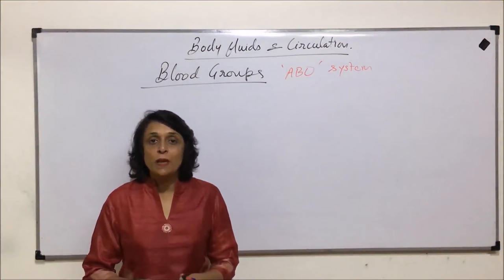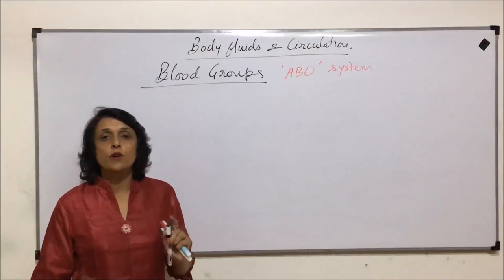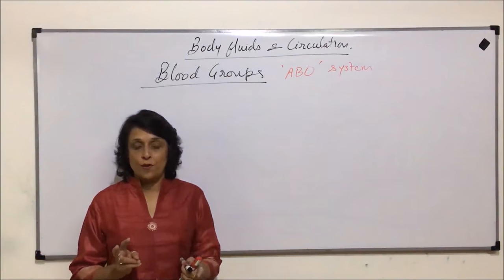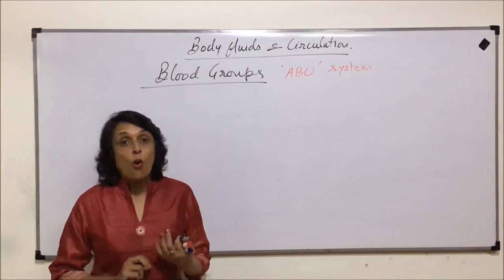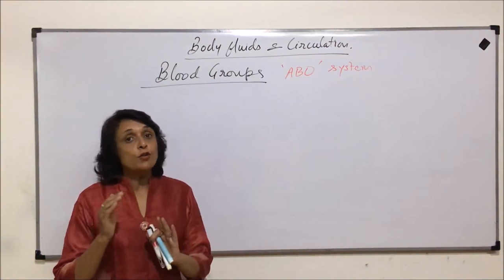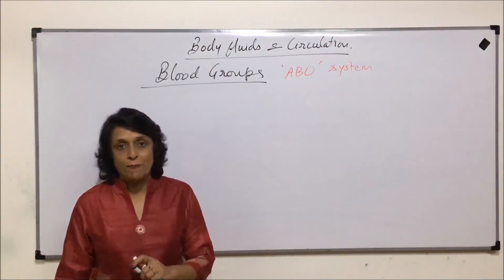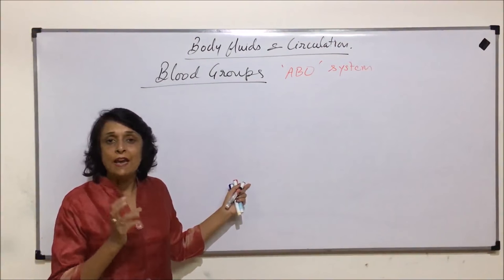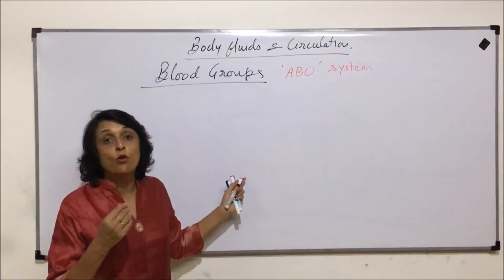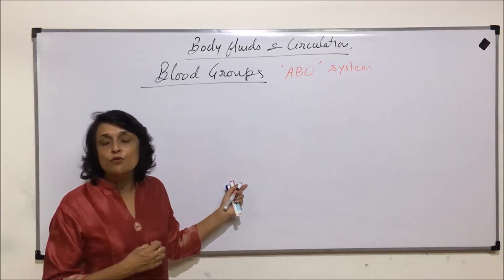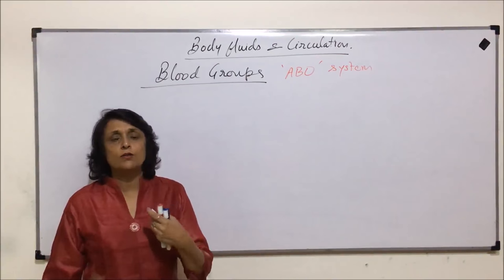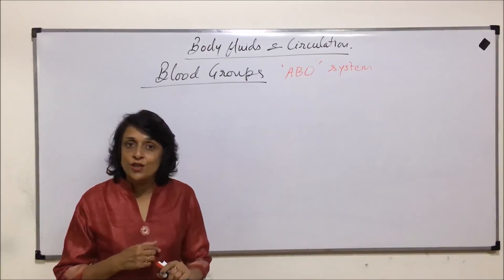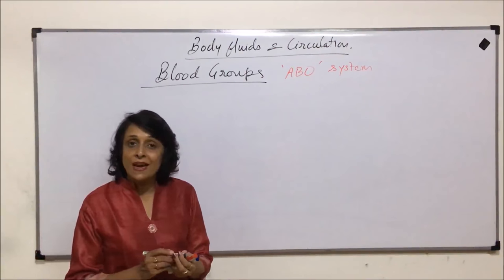After understanding the four types of blood groups, we want to understand what would happen if one type of blood mixes with the other. This happens during two situations: blood transfusion or from the mother to the fetus, which is considered ABO incompatibility. Here we are talking about what would happen if one type of blood mixes with the other, where we talk of donors, blood donations, and transfusions during surgeries or accidents with excessive bleeding — and why we use the terms universal donors and universal recipients.